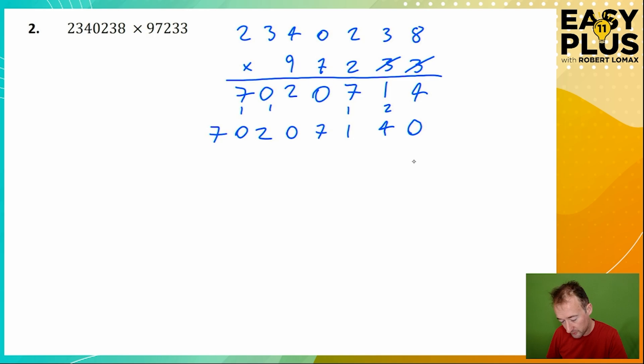And the next line we need to begin with 2 0s. And now we need to multiply by 2. 2 times 8 is 16. 2 times 3 is 6 plus the carried 1 gives us 7. 2 times 2 is 4. 2 times 0 is 0 of course. 2 times 4 is 8. 2 times 3 is 6. And 2 times 2 is 4.